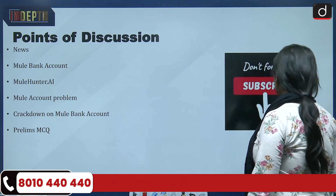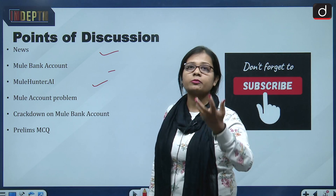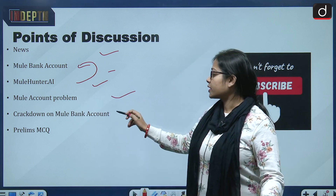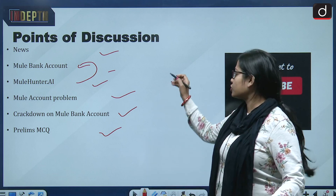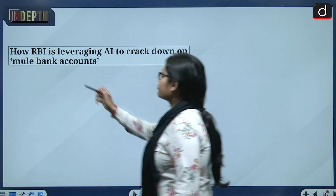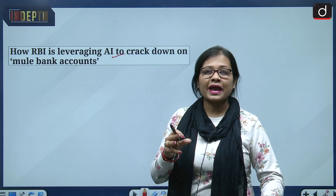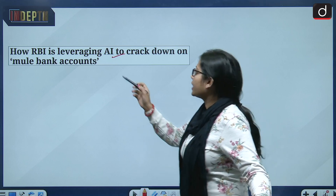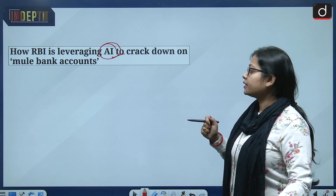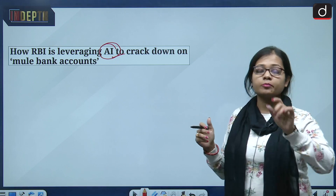Let us first look at the timeline. First, we will cover the news, then what is a mule bank account, then MuleHunter.ai — the solution RBI has proposed — then the mule bank account problem, crackdown on mule bank accounts, and finally prelims practice. This topic is relevant from General Studies Paper 3, that is Economy. The news talks about how RBI is leveraging artificial intelligence to crack down on mule bank accounts. The Reserve Bank of India has indicated that AI-based help needs to be taken to crack down on mule bank accounts, and this AI will work efficiently in doing so.